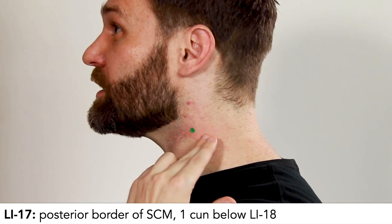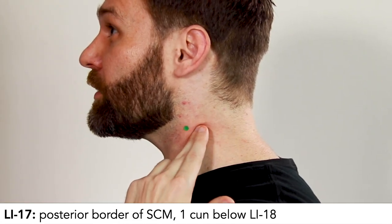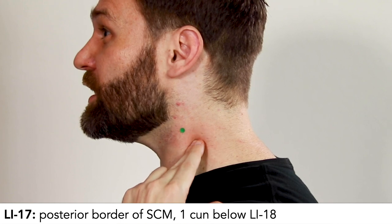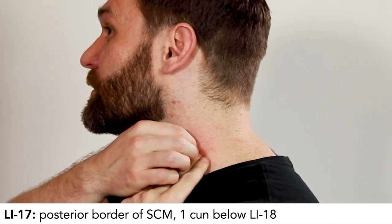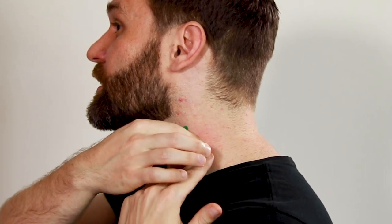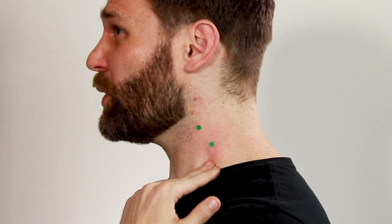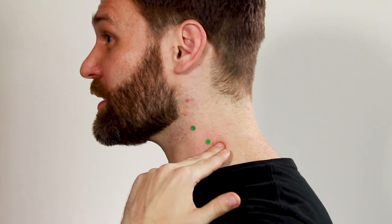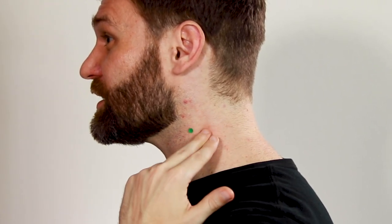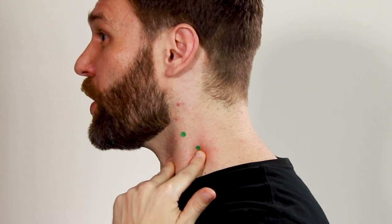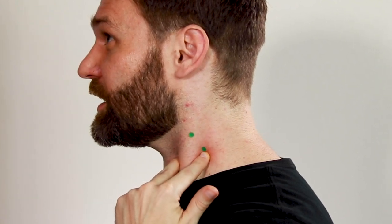LI17 is on the posterior border of the SCM, 1 cun inferior to LI18. How do we measure 1 cun? Well, you really don't have to. This is kind of the point where the neck meets the shoulder, and the shoulder meets the neck, and we're on the posterior border of the SCM.